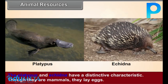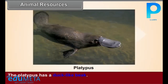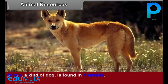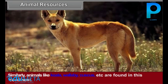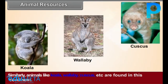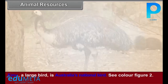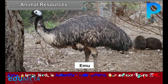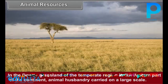The platypus and echidna have a distinctive characteristic: though they are mammals, they lay eggs. The platypus has a duck-like beak. The dingo, a kind of dog, is found in Australia. Similarly, animals like the wallaby, cuscus, etc. are found in this continent.